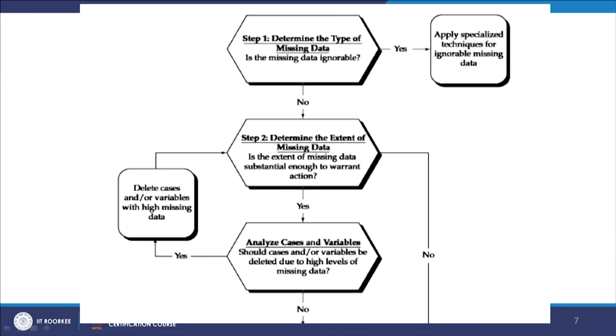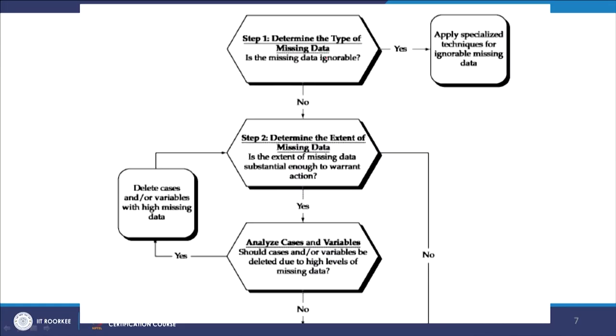The first step is to determine the type of missing data. Is the missing data ignorable? Just as a doctor may sometimes safely ignore minor symptoms, if missing data is ignorable you can carry forward the analysis. However, if the patient has a serious kidney problem and you ignore the symptoms, it could be extremely dangerous. Sometimes ignoring is fine, but other times it could be fatal - the same analogy applies to your data.